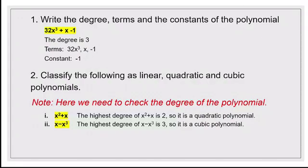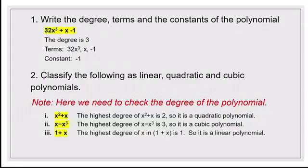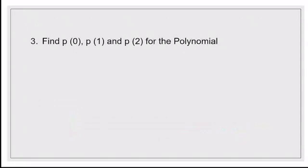If the polynomial has degree 3, it is called a cubic polynomial. So x minus x³ is a cubic polynomial. Now for 1 plus x — there's no written power, so we put 1. The highest power of x is 1, and if the degree is 1 that polynomial is called a linear polynomial. So 1 plus x is a linear polynomial.